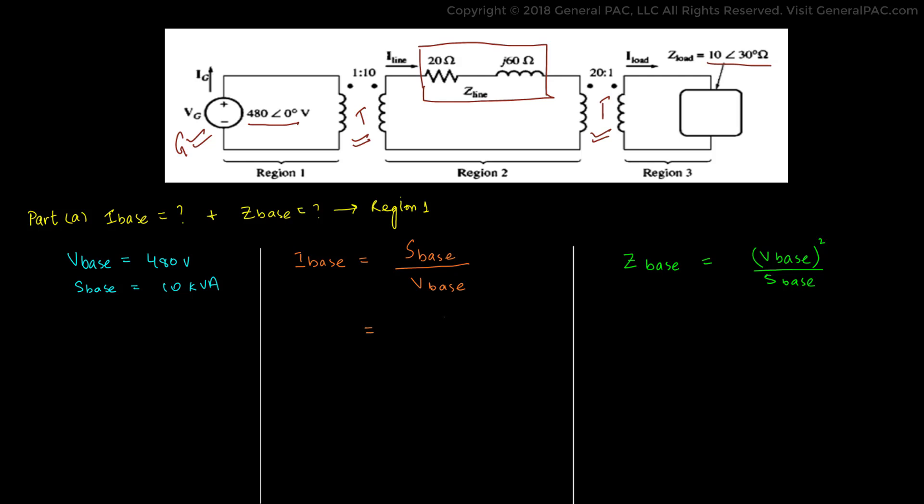So the base current is equal to power base divided by the base voltage, which equals S base divided by V base, which we know that to be 10 kVA divided by 480 volts and that gives us 20.83 amps. Now that's the base current.